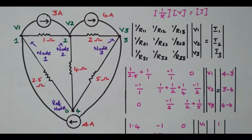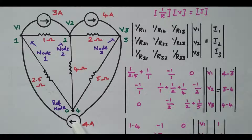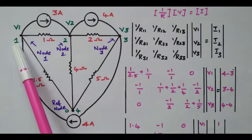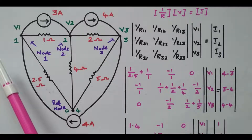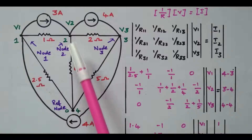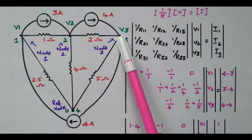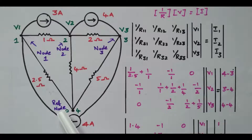Now refer the network. There are three current sources available. By inspecting this network, we can easily identify the nodes. A node is nothing but a junction point where current sources and resistors are connected together. We assume node 1 with voltage V1, node 2 with voltage V2, and node 3 with voltage V3. We have one more node — the reference node, the fourth node — but the potential at the reference node is zero. It is a return path.